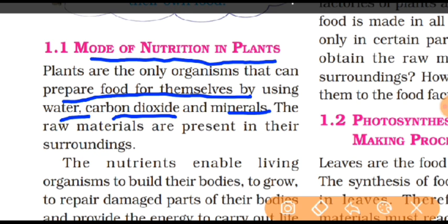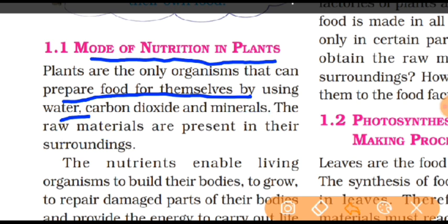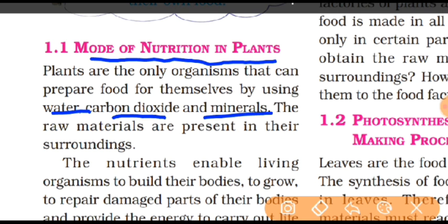Plants prepare food for themselves using water, carbon dioxide, and minerals. These are the raw materials present in their surrounding area. If you have a question about what raw materials can be used to prepare food, you can write: water, carbon dioxide, and minerals.